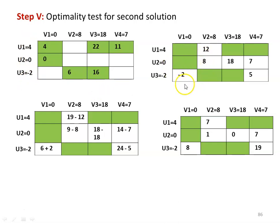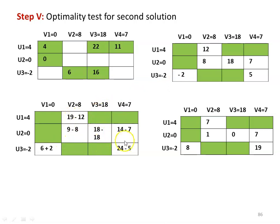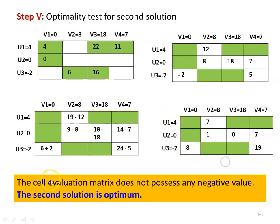Calculating UV values for all unallotted (white) cells: 4+8=12, 0+8=8, 0+18=18, 0+7=7, −2+0=−2, −2+7=5. Subtracting from the original cost matrix: 19−12=7, 9−8=1, 18−18=0, 14−7=7, 6−(−2)=8, 24−5=19. The cell evaluation matrix values are 7, 1, 0, 7, 8, and 19 — no negative values. The second solution is optimum.